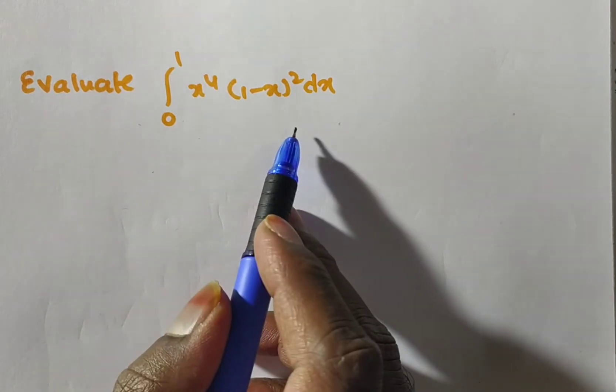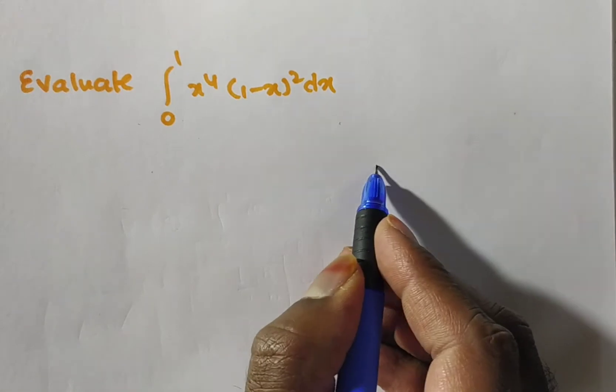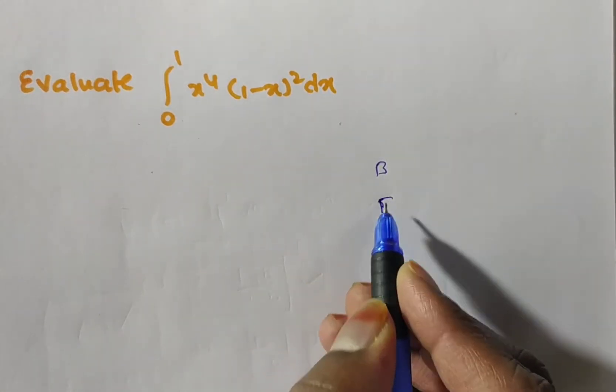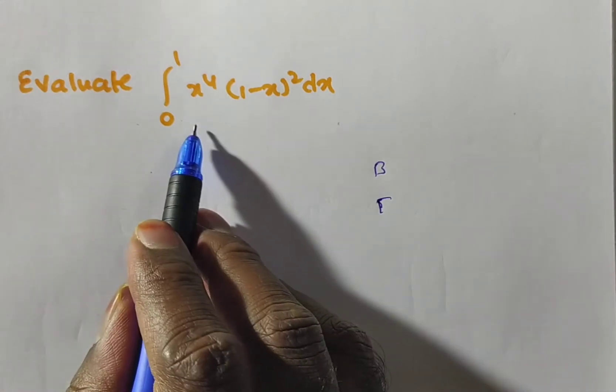So to evaluate this problem, which formula we will use, which function? That is beta function and gamma function. And which one, this is in the form of generally...